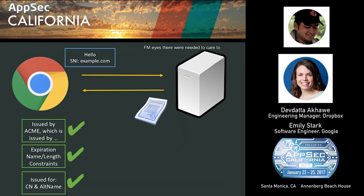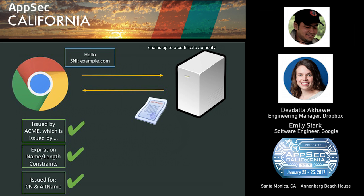The server says it's example.com and provides a certificate proving that, which the client then puts through the ridiculously complicated procedure of certificate verification. Given the certificate for example.com, the client checks: does this have a chain of signatures that chains up to a trusted certificate authority? Is the certificate valid date-wise — is it expired or not yet valid? Is the certificate actually for the correct name that was requested? This is skimming over a lot of detail, but this is what a client might check during certificate verification.